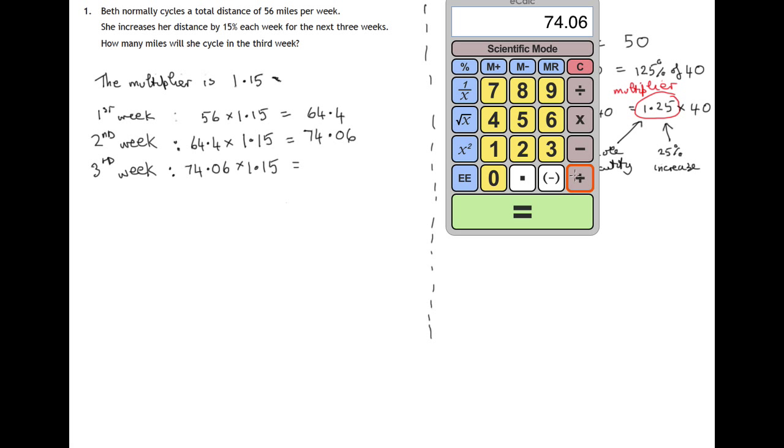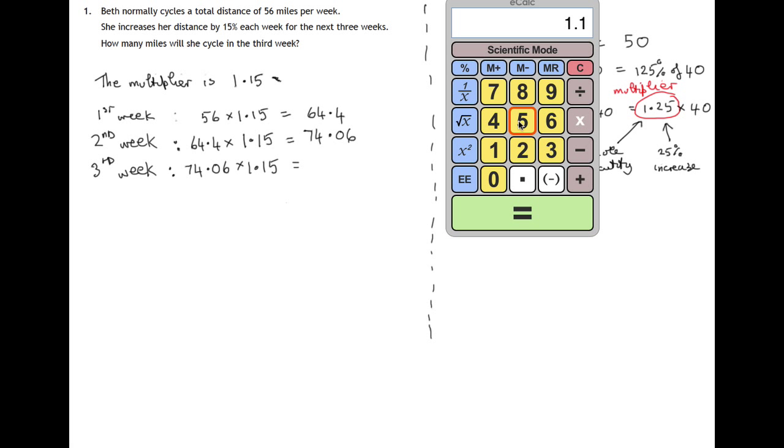That gives 74.06. Multiplying by 1.15 again equals 85.169. How many miles will she cycle in the third week? She'll cycle 85.169 miles.